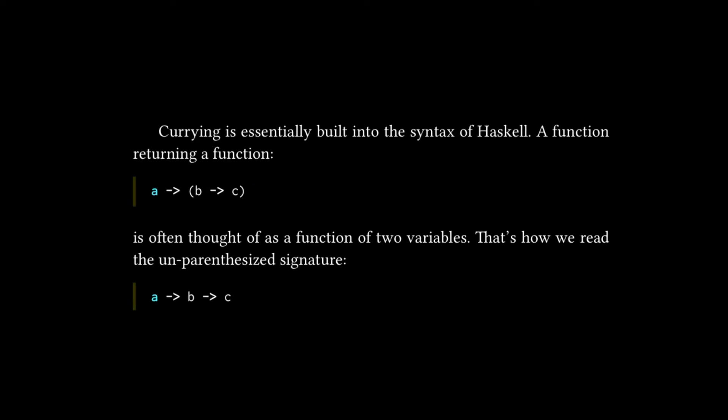Skipping straight into currying, what is currying? It says in the book, currying is essentially built into the syntax of Haskell. A function returning a function, a -> (b -> c), is often thought of as a function of two variables. That's how we read the un-parenthesized signature: a -> b -> c.